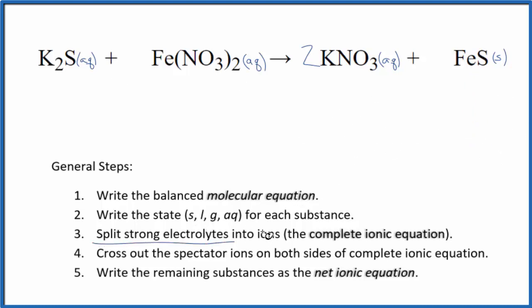Now we can split the strong electrolytes into their ions. This is the complete, sometimes called total ionic equation. So potassium on the periodic table is in group one, it has a one plus. Sulfur, that sulfide ion, is always two minus. So we have two potassium ions plus the sulfide ion, S2-. And I'll write the states at the end.